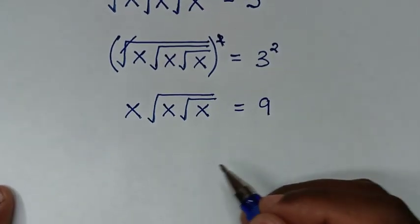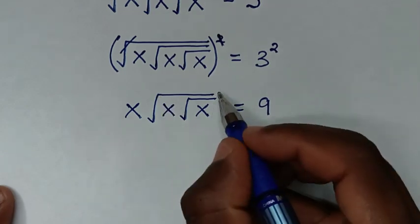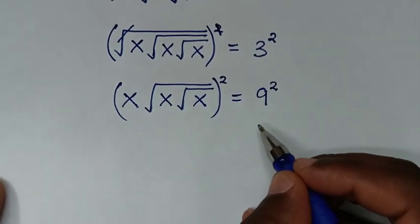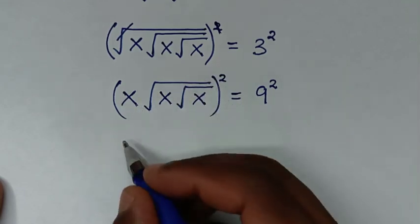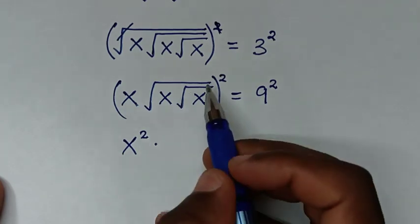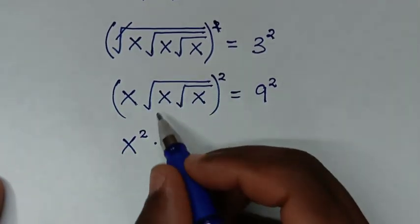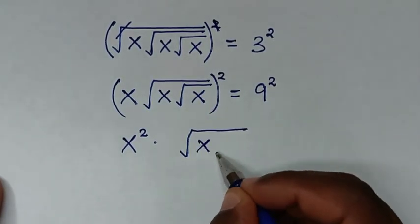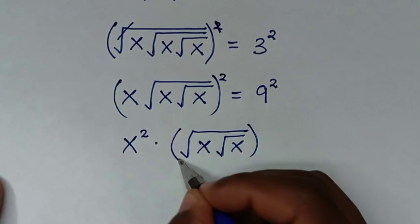In the next step, to remove this second square root, we will square again in both sides. We take this square inside, so it will be x squared, then times the square root bracket squared. So it will be square root of x under square root of x, then bracket squared.